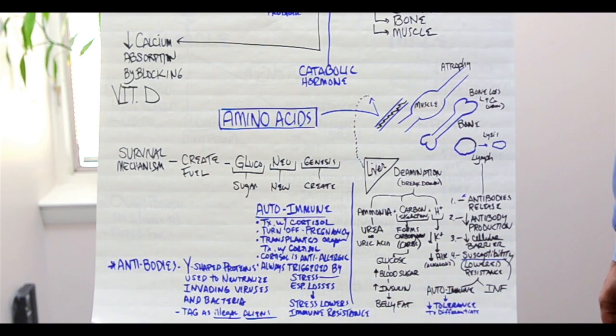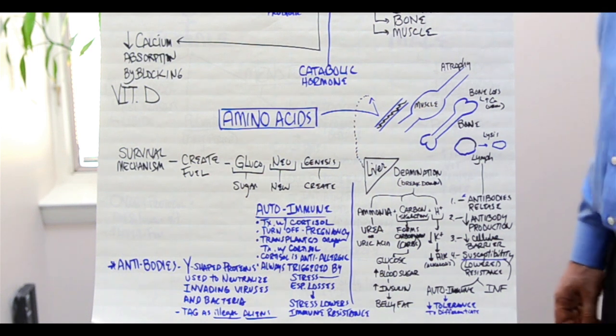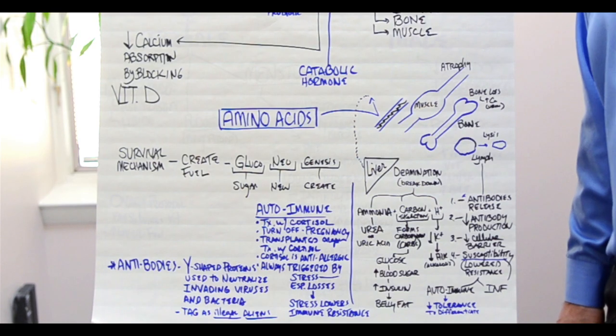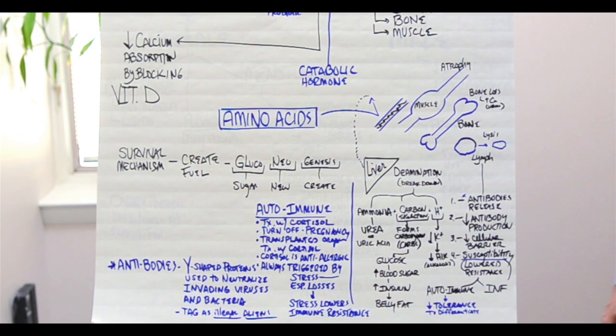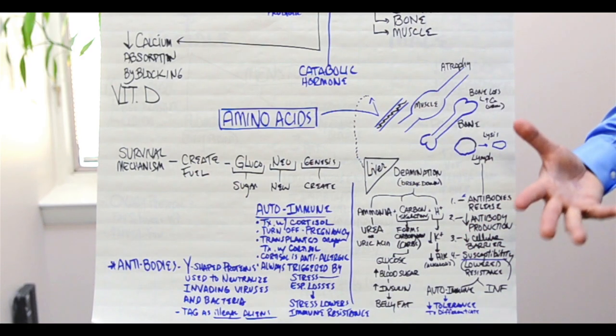There's a delicate balance of your body determining what's a good cell, what's a bad cell, what's a good microbe, what's bad friendly bacteria, unfriendly. When it loses control, it starts developing autoimmune diseases.